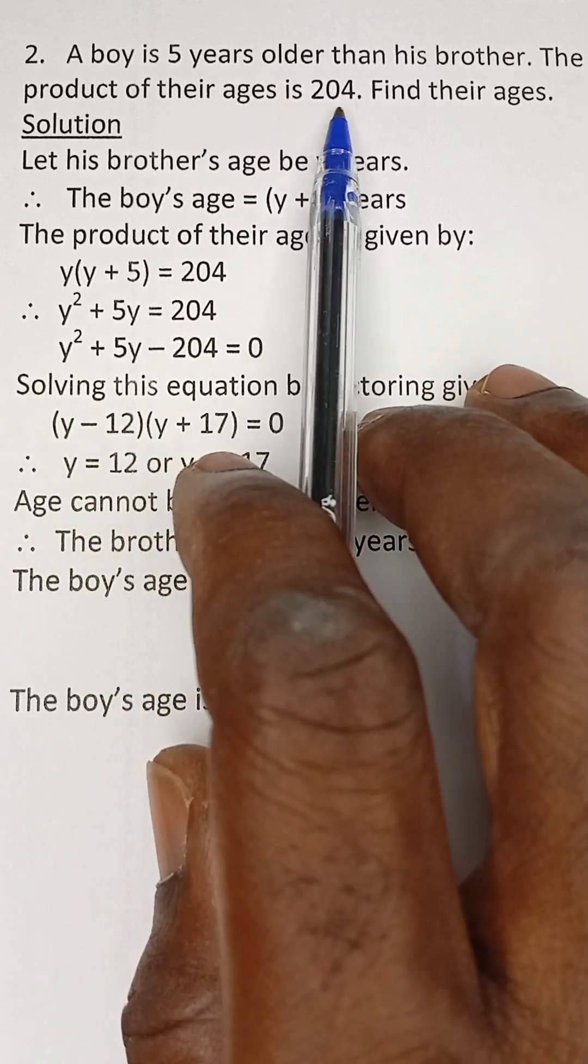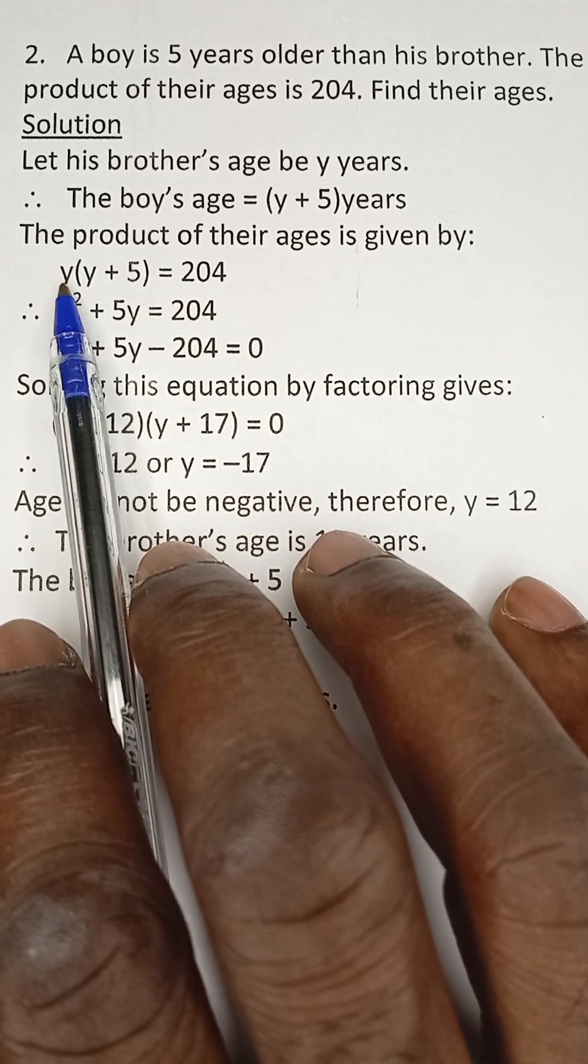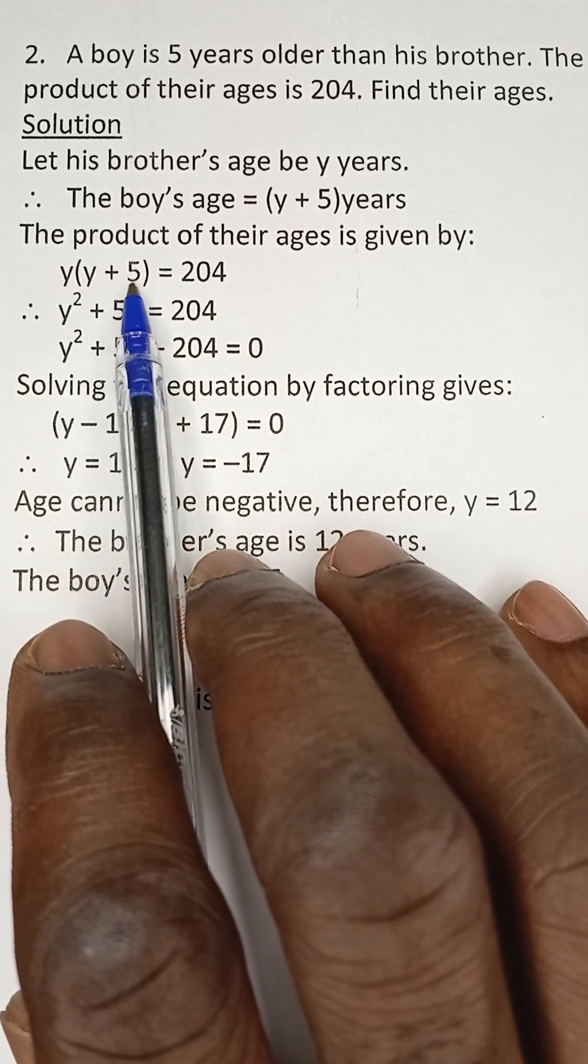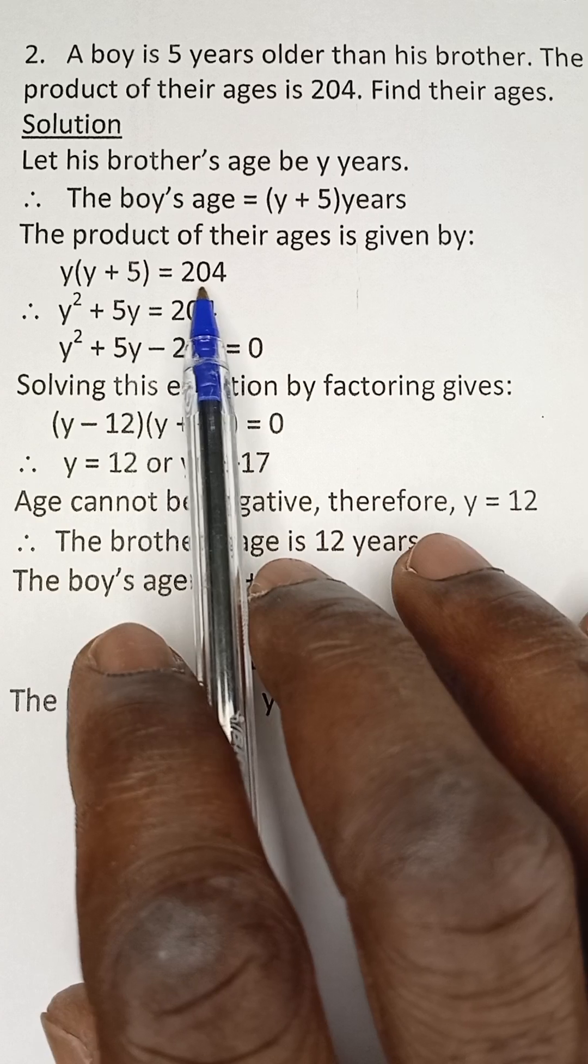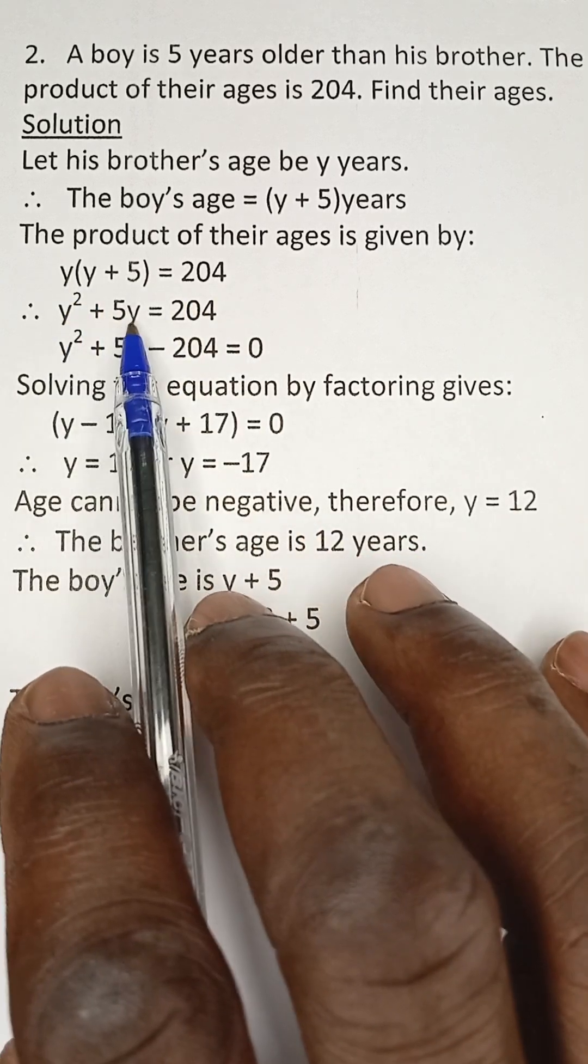Now we are told that the product of their ages is 204. So the y years, which is the brother's age, multiplied by y plus five, which is the boy's age, should be equal to 204. When we expand this bracket we have y squared plus five y equals 204.